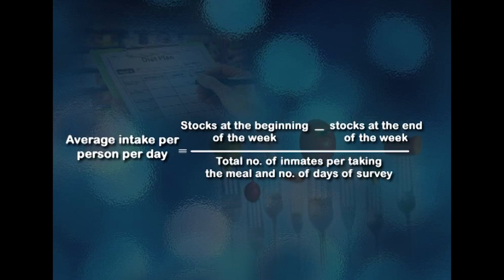There is a formula to calculate the average intake per person per day: stocks at the beginning of the week minus stocks at the end of the week, divided by the total number of inmates taking the meal and the number of days of the survey. Though a large sample can be covered in a relatively short time, active cooperation of the respondent is very necessary. This method is possible only when the community is fairly educated and subsists on a cash economy where food is usually purchased from the market.